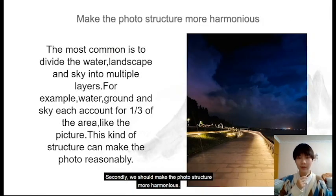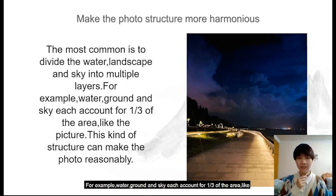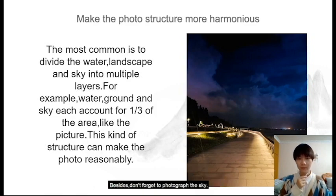Secondly, we should make the picture more harmonious. There are various methods of composition when we take photos. The most common is to divide the landscape into multiple layers — for example, water, ground, and sky each account for one third of the area, like in this picture. This kind of structure can make the photo feel balanced.